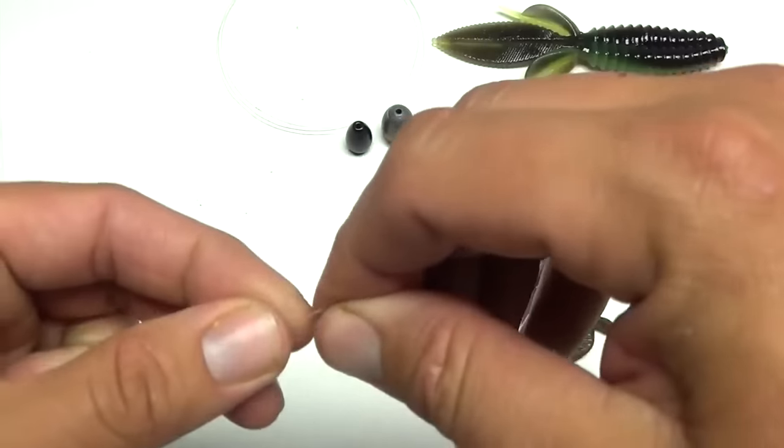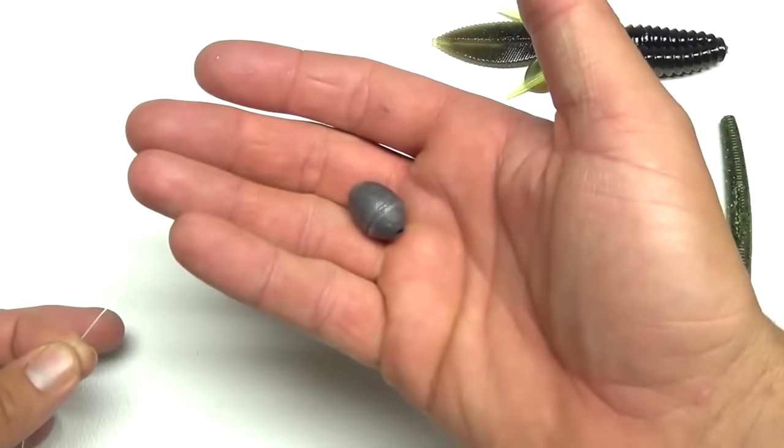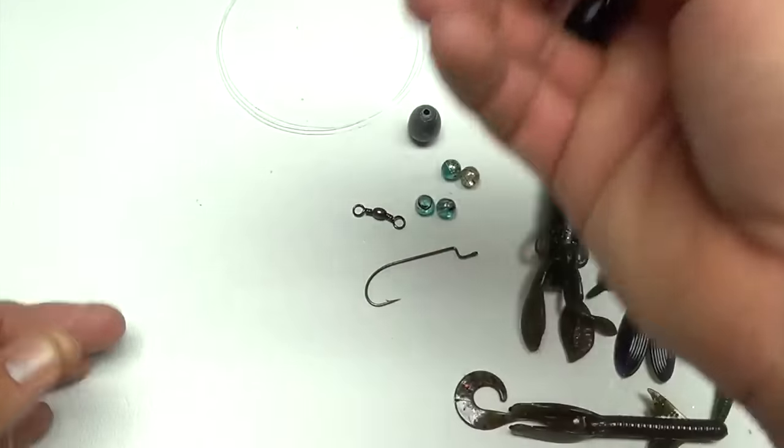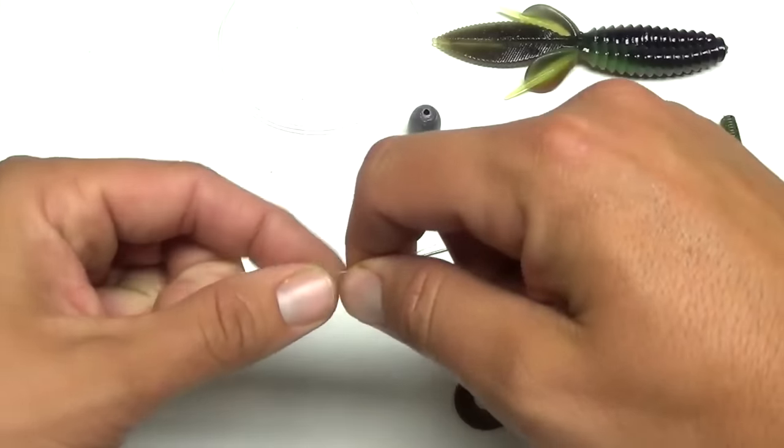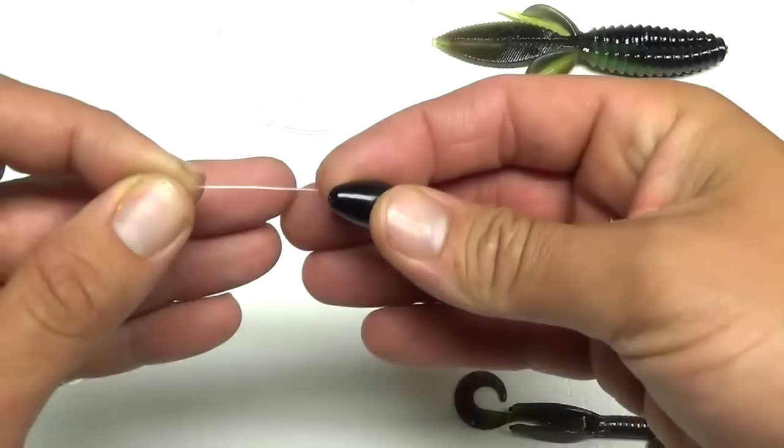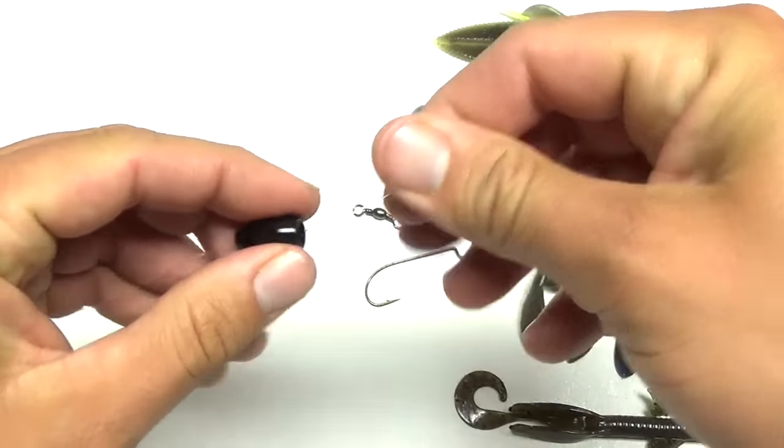First thing you want is your weight. All egg type sinkers, just the lead ones work good. I believe a half ounce, and then this is a three quarter tungsten ounce. Whatever type of weight you want to use, but these are the two main styles that I normally use. Just going to thread your weight on your main line.